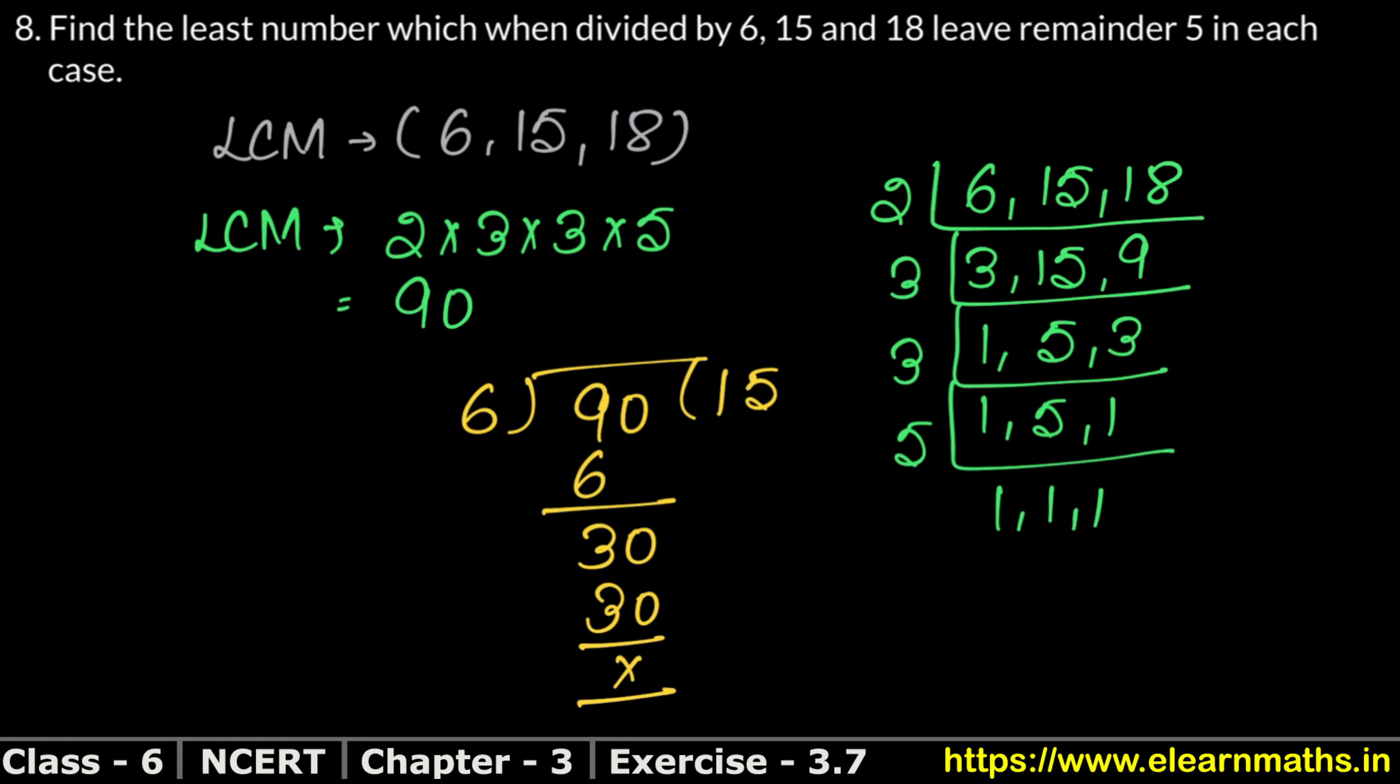Look, there is no remainder left. And it says that 5 remainder should be left. So we will add 5 to this number. And if we divide that number from 6, 15 or 18, we will get 5 remainder. Right?